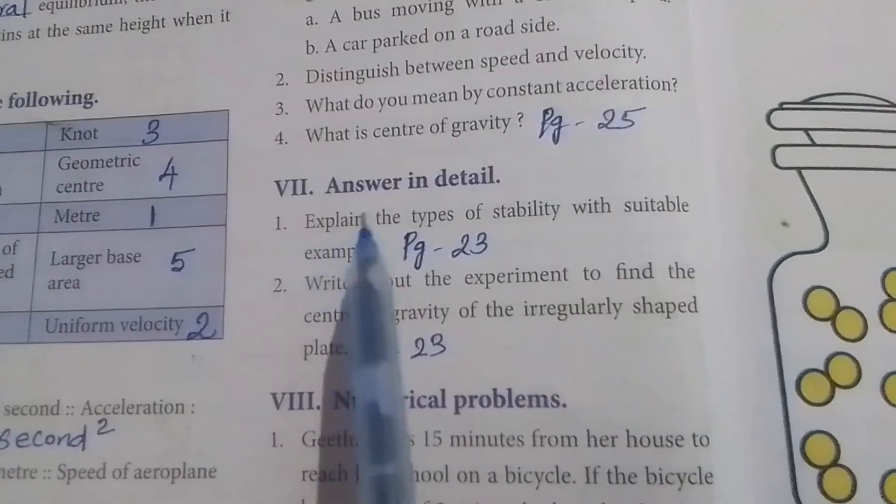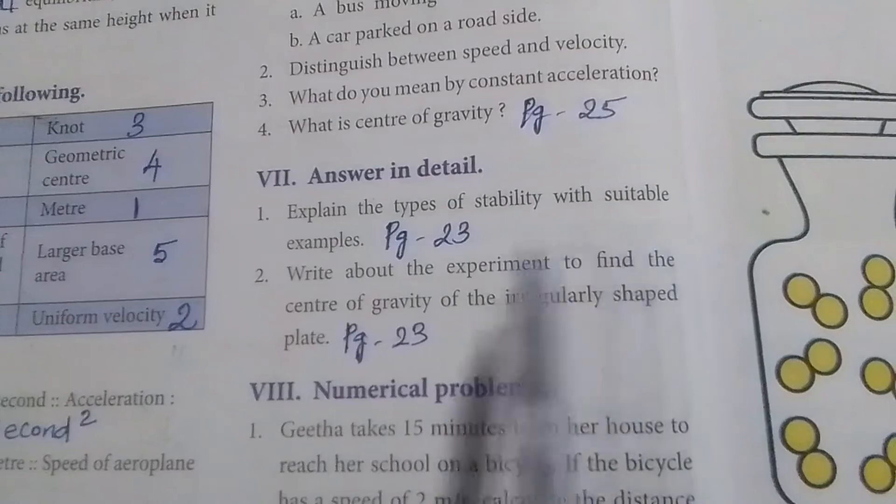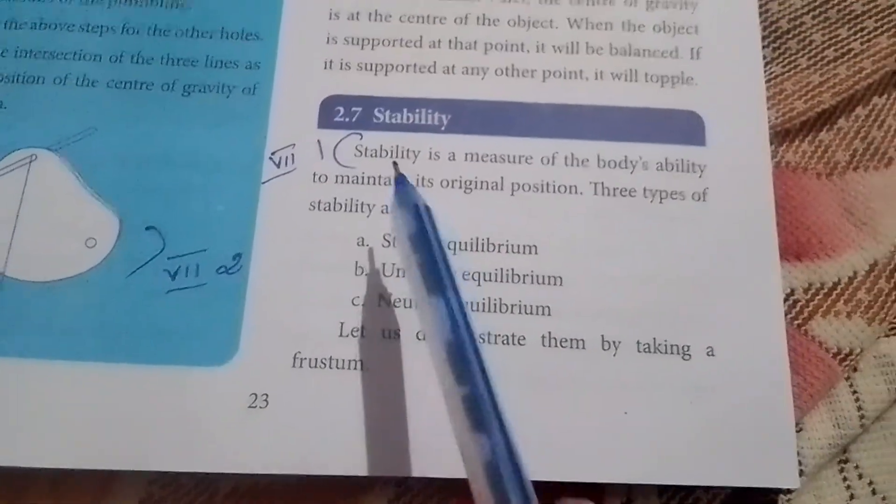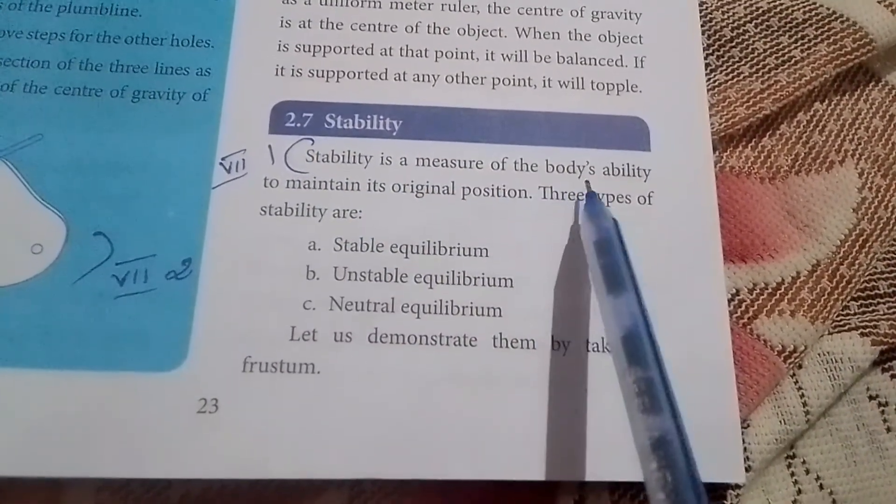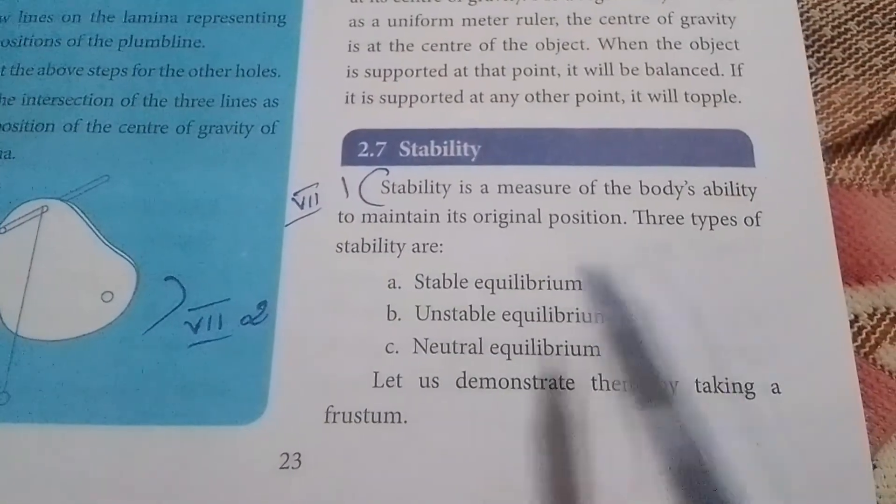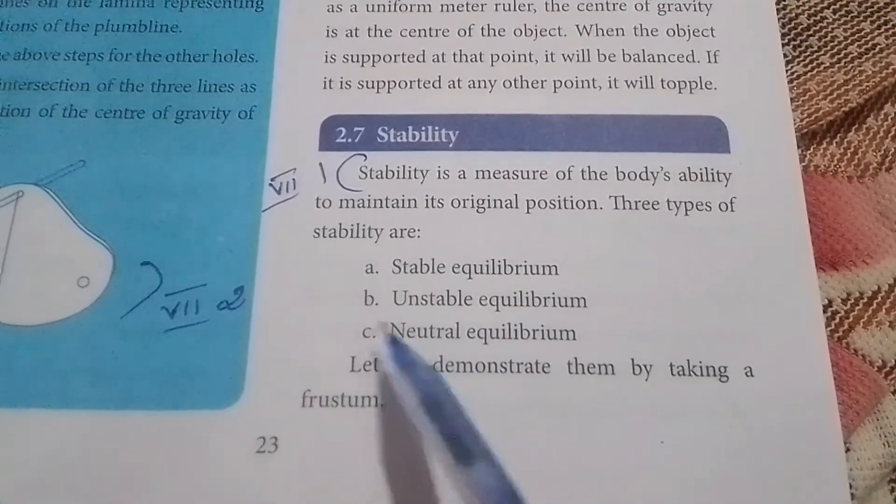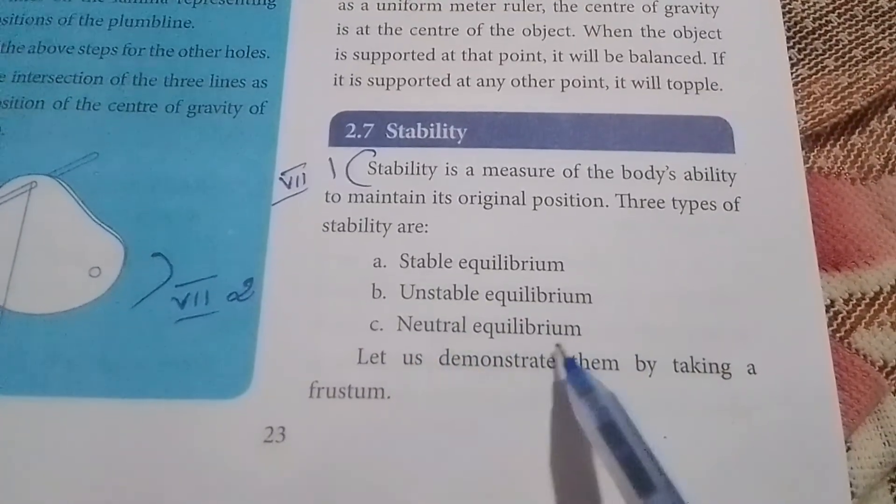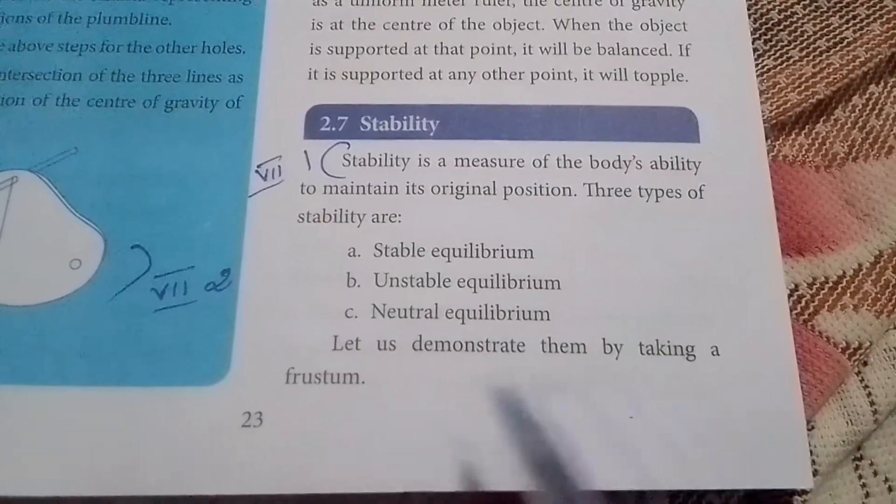Seventh Roman letter: Answer in detail. First one: Explain the types of stability with suitable examples. Page number 23. Stability is a measure of the body's ability to maintain its original position. Three types of stability are: Option A - Stable equilibrium, Option B - Unstable equilibrium, Option C - Neutral equilibrium. Let us demonstrate them by taking a frustum.